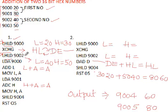Using LHLD 9002, it loads values from addresses 9002 and 9003 into the HL pair register. So 40 goes into L and 50 goes into H. Then we use LDA 9000, which loads the value at address 9000, which is 20, into the accumulator. So the accumulator now holds 20.